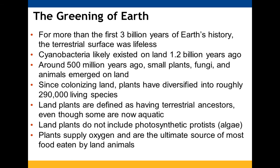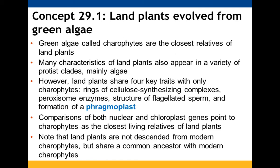The charophytes we talked about in chapter 28 — the green algae — are the closest relatives evolutionarily to land plants. A lot of the characteristics we see in land plants we will also see in the protist clades, especially with the algae.